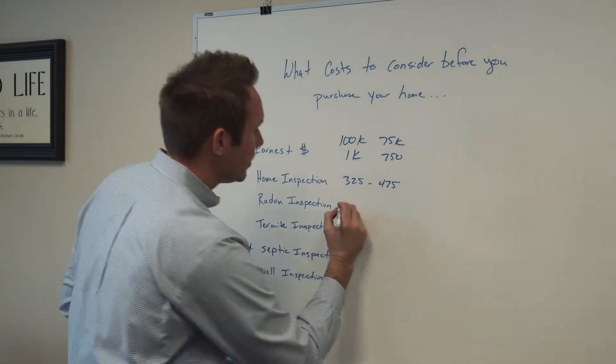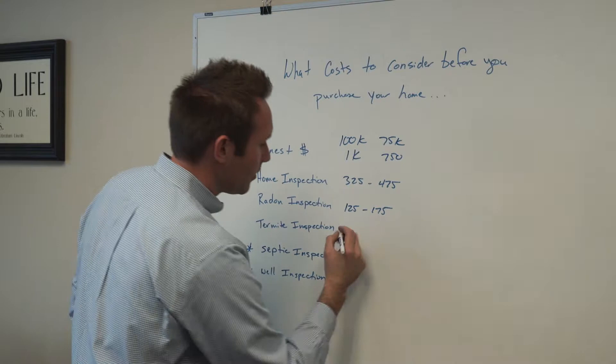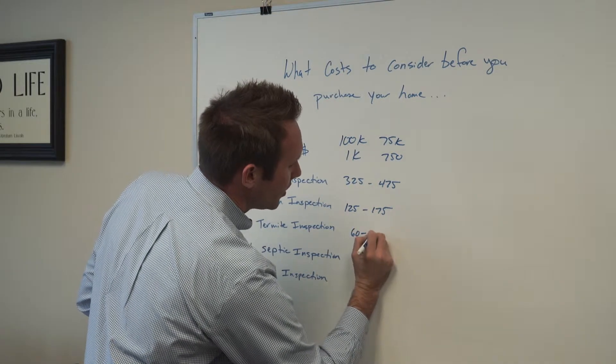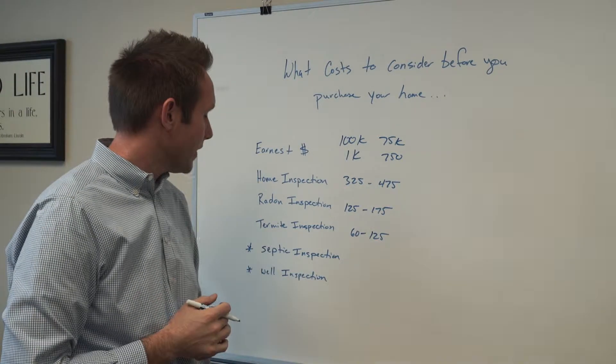Radon inspection is $125 to $175. Termite inspection is anywhere from $60 to $125, again depending on location and whether there's a basement or crawl space.